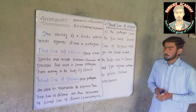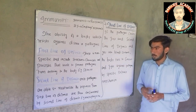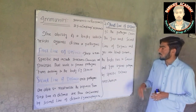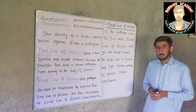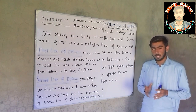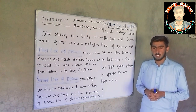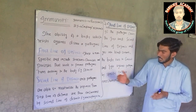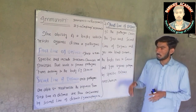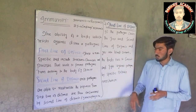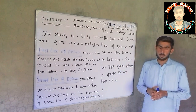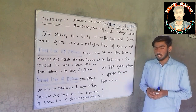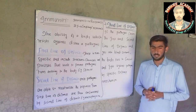Third line of defense: when pathogens cross the first and second line of defense, they are encountered by the third line of defense. Third line of defense is a specific mechanism, which means it can differentiate between specific microorganisms. Second line of defense is also a non-specific mechanism, like the first line of defense, meaning it cannot differentiate between specific microorganisms.